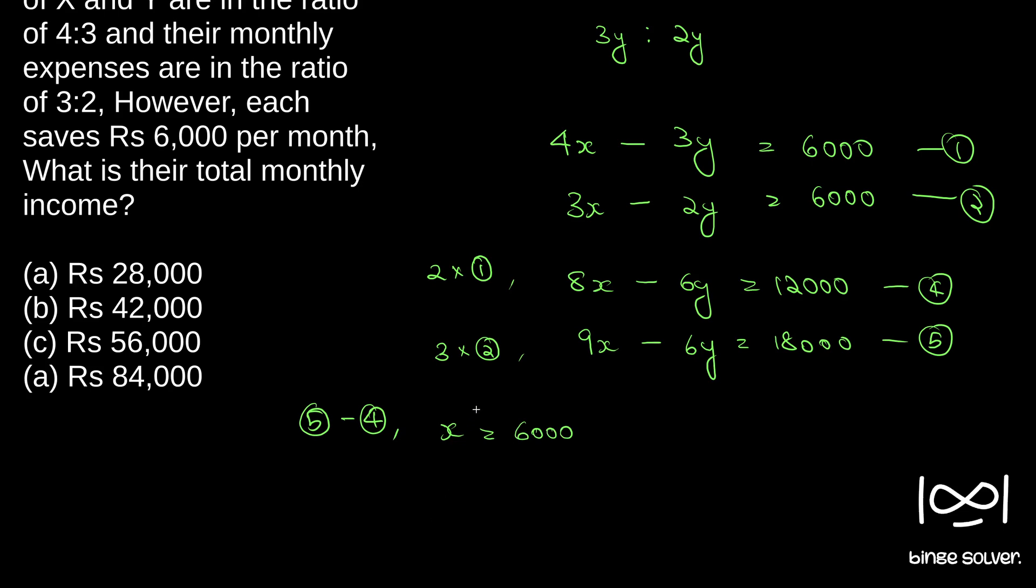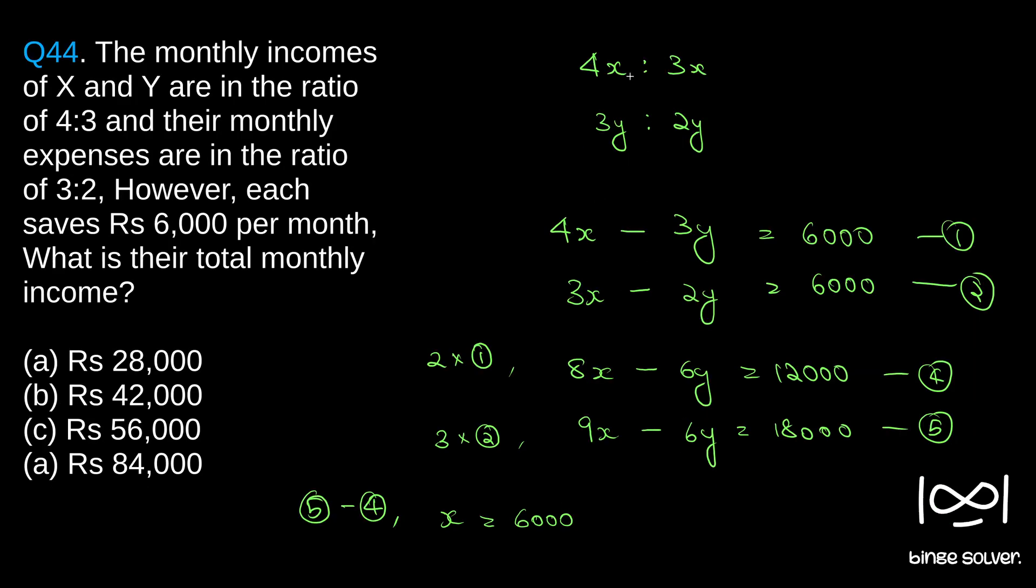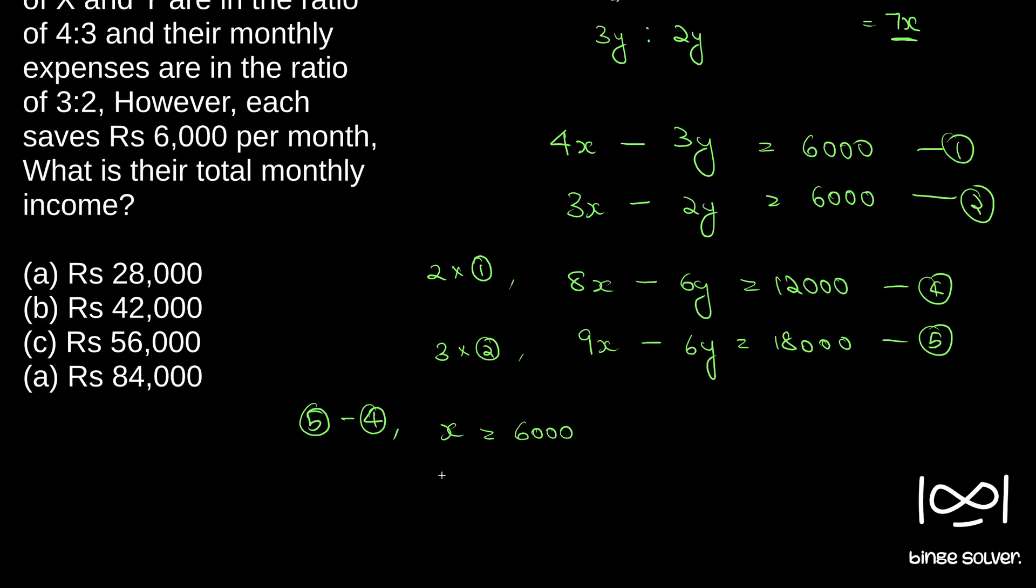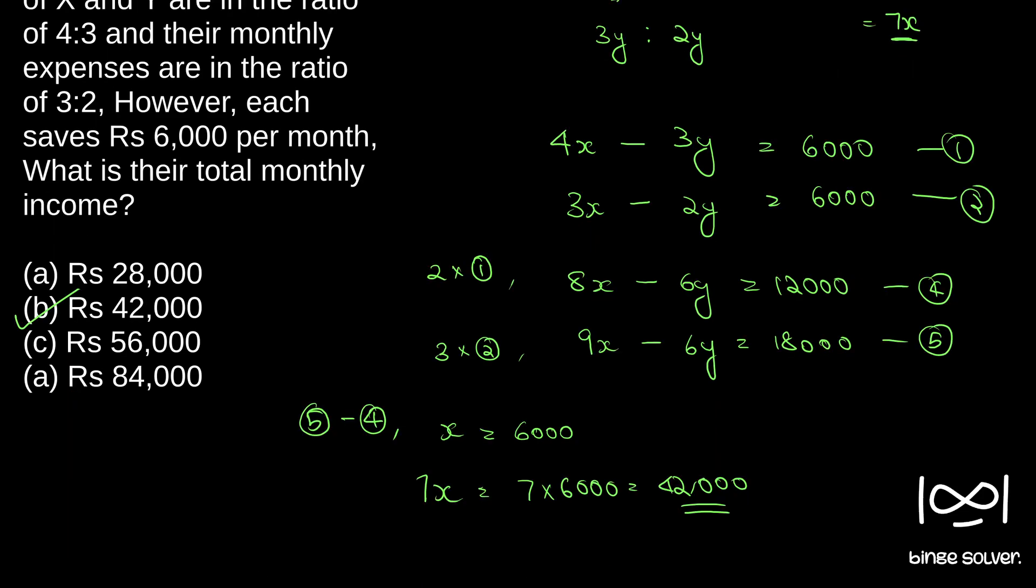The question is what is the total monthly income. We assumed 4x and 3x as their income, so total income is 4x plus 3x, that is equal to 7x. We got our x as 6,000, so 7x is 7 into 6,000, that is 42,000. Our solution to question 44 is B, 42,000.